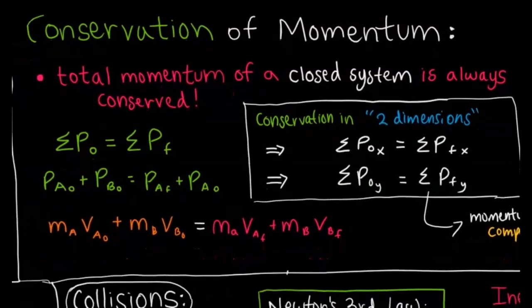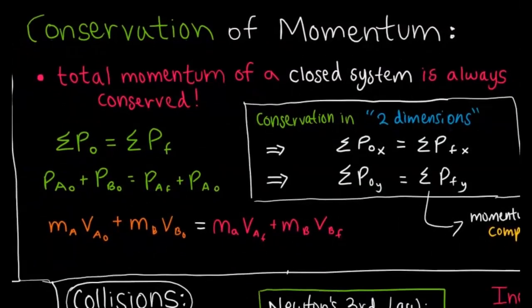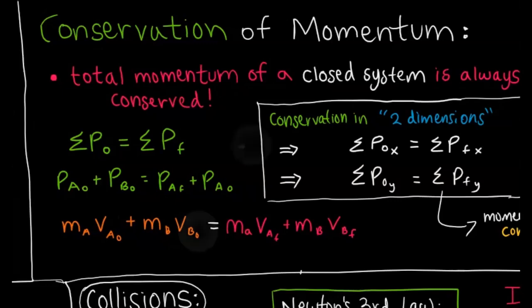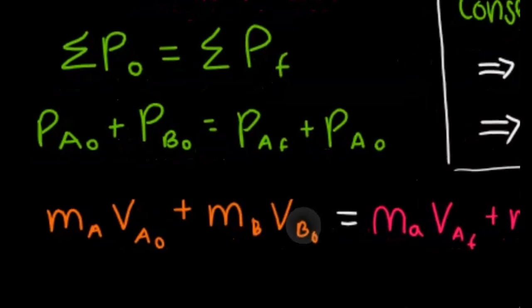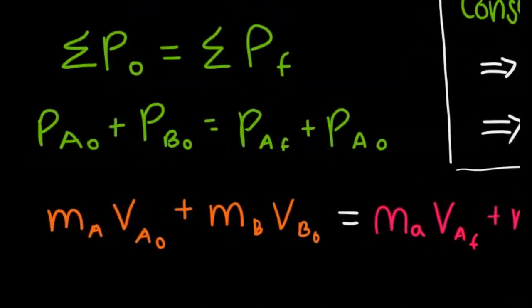The first big idea of momentum is conservation of momentum. In closed systems without external forces, momentum is always conserved. We think about this in terms of collisions. Here's the general equation for conservation of momentum: the sum of the momentum initial is equivalent to the sum of the momentum final, very similar to conservation of energy.